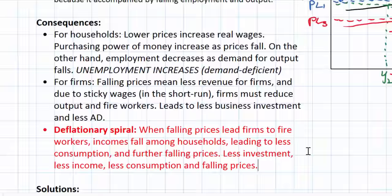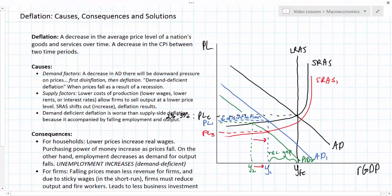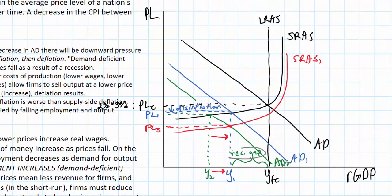Looking back at our graph, we have already started to show the beginnings of a deflationary spiral. If we continue the logic here, then the deflation that already exists and the recessionary gap that already exists will further put downward pressure on wages. And as wages fall, aggregate demand will continue to fall, and we could end up with a country stuck in a recession with further and further deflation over time.